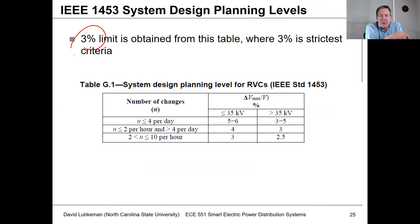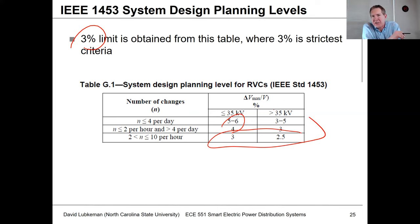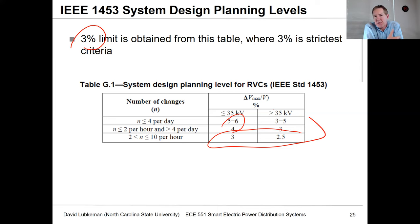3% is kind of your strictest criteria. If events are less frequent, you can maybe get by with larger percent changes. But typically, if you're doing a study, you're probably going to look at something between 2.5% and 3%. Each utility has slightly different takes on what they're going to use, but between 2.5 and 3% is what a lot of utilities look at in terms of voltage variability due to things like flicker for a PV system installation.